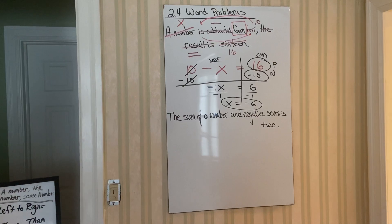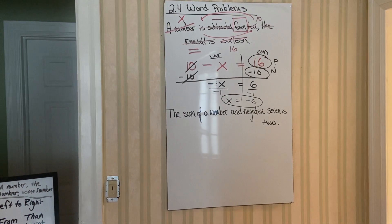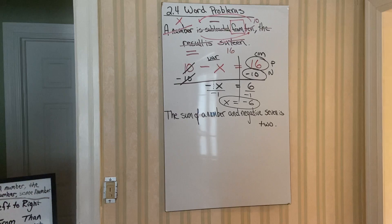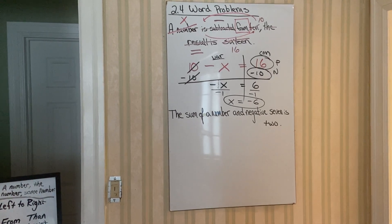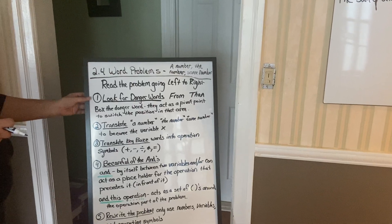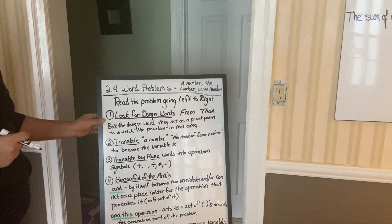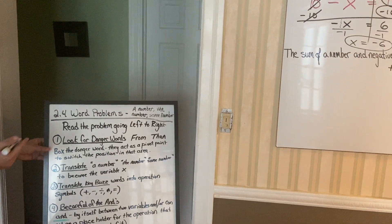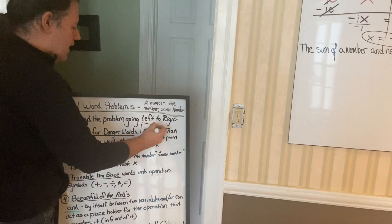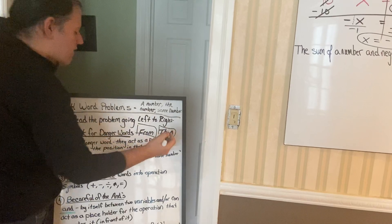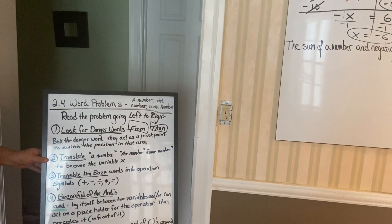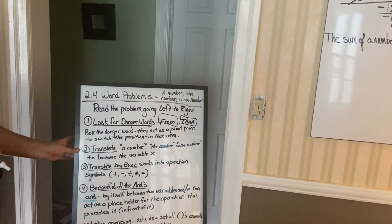Let's look at our next problem here. The sum of a number and negative 7 is 2. Okay. We read the problem. We went from left to right. We're going to look to see if there's any danger words. Nah. I look at it again and I don't have any danger words. I don't have this word from and I don't have this word than. Next, translate anything that says a number, the number, some number. Just cross it out.